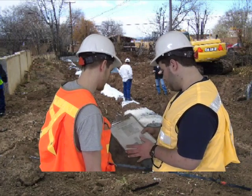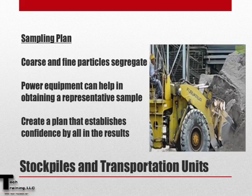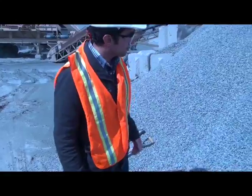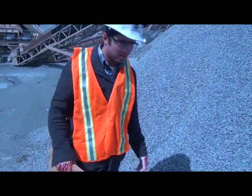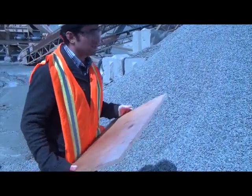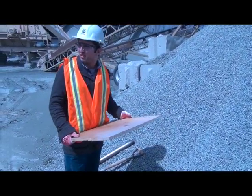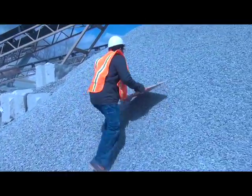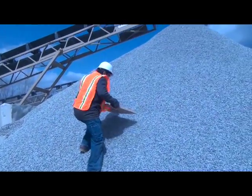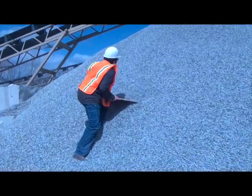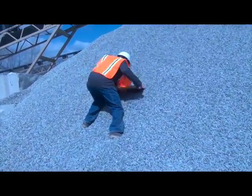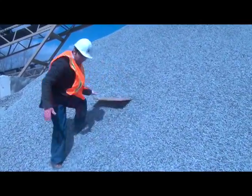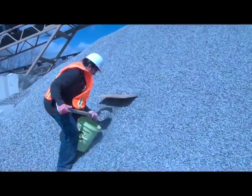Furthermore, using power equipment may be helpful in obtaining a representative sample. When power equipment is not available, samples from stockpiles should be made up of at least three increments, taken from the top third, midpoint, and bottom third of the volume of the pile. A board shoved vertically into the pile just above the sampling point aids in preventing further segregation.